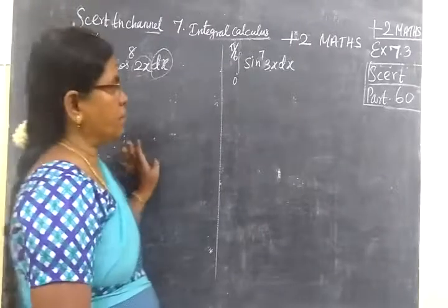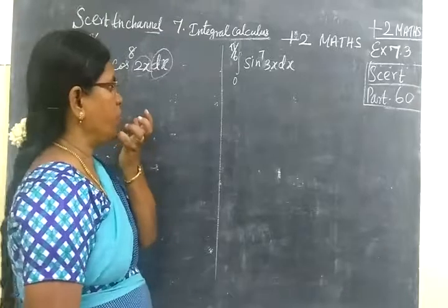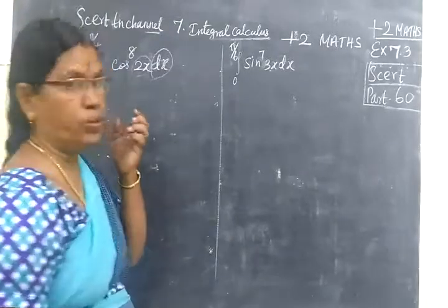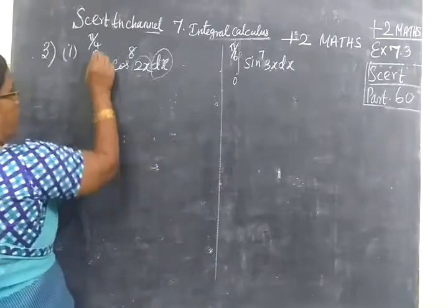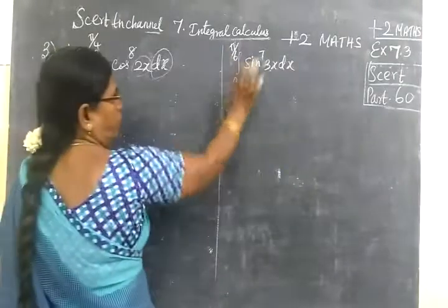So now we are seeing Part 60, Exercise 7.3. In the last class we were seeing the first two sums. Now we are seeing the third sum. So it is integral 0 to 5π/4. It is 0 to 5π/6.